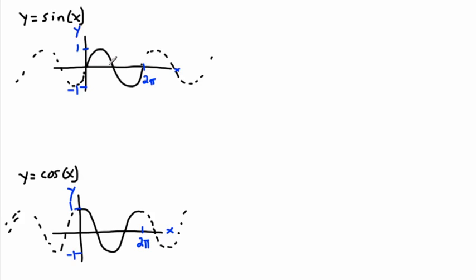It helps to draw five key points to sketch one of these curves: the peak, the middle, the bottom, the middle again, and back. Since the full period is 2 pi, halfway is pi, and half of that is pi over 2. Counting by pi over 2: the points are 0, pi over 2, pi, 3 pi over 2, and 2 pi. The same labeling applies to cosine.